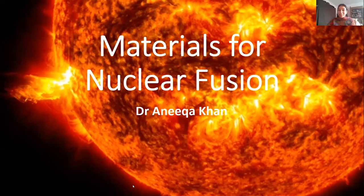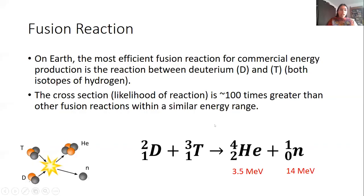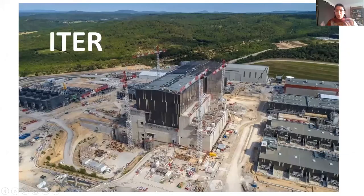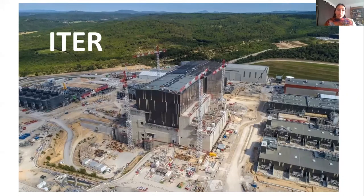Anika introduces herself — she's at the University of Manchester as a research fellow in materials for nuclear fusion. Recapping Howard's point: on Earth, the most efficient fusion reaction for commercial energy production will be between deuterium and tritium, because it has a higher cross-section compared to other fusion reactions in a similar energy range. She'll also discuss ITER, having previously worked there — a remarkable example of scientists from all over the world collaborating toward one goal.